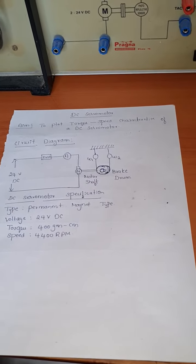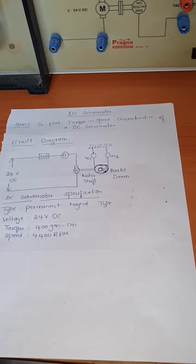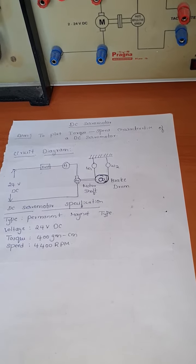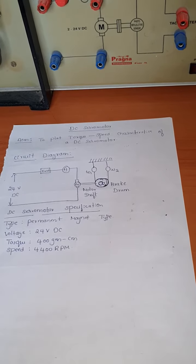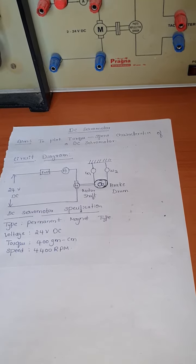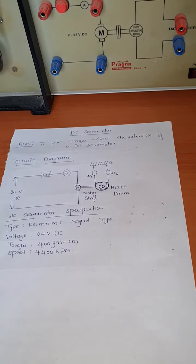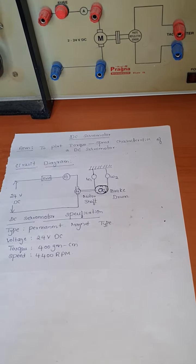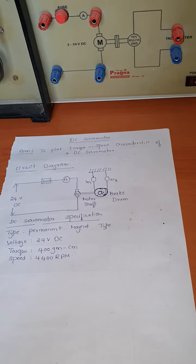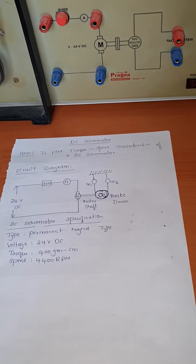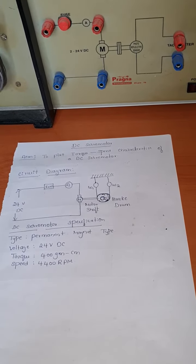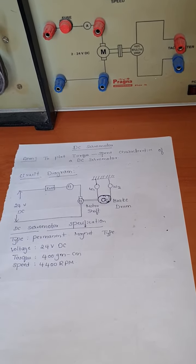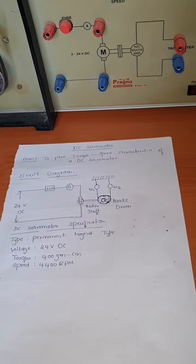The servomotor has two types: one is the DC servomotor and the other is the AC servomotor. In a DC servomotor, the input supply is DC. In this experiment, we are going to find the relation between speed versus torque in a DC servomotor — that is, how speed and torque are related.